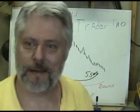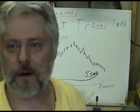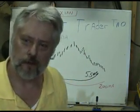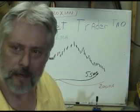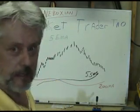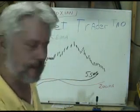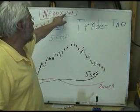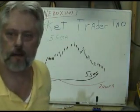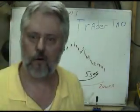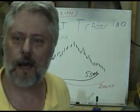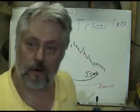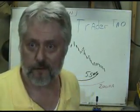I'm Bob Colling with Market Trader Tau. I also want to introduce you to my web name, which is Nebosian — spelled N-E-B-O-X-I-A-N. You can type that into Google and you will be able to find my blog site.